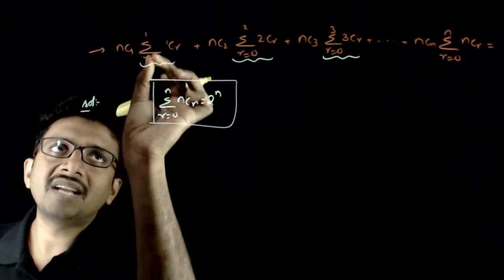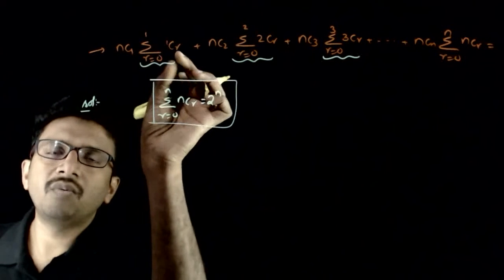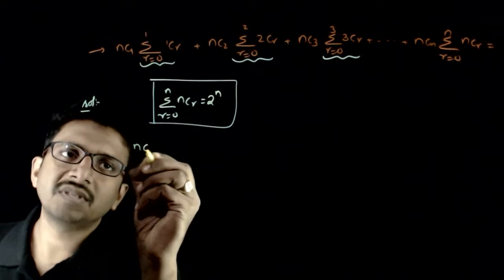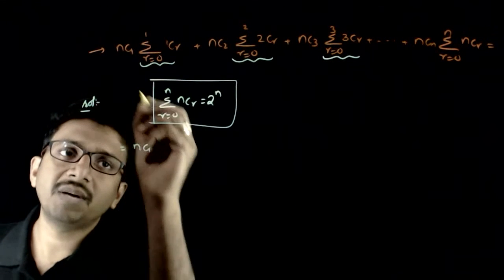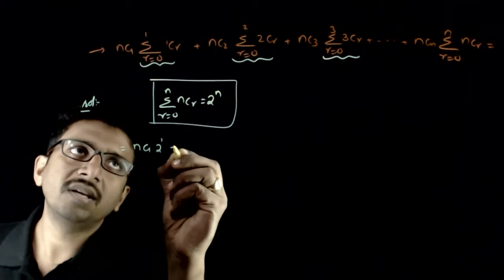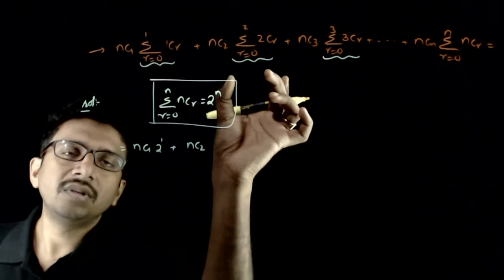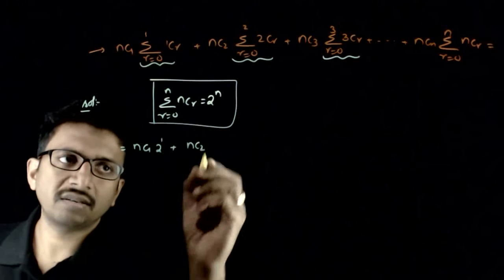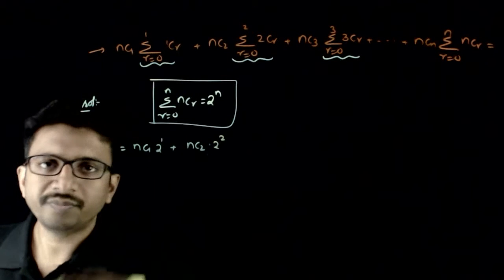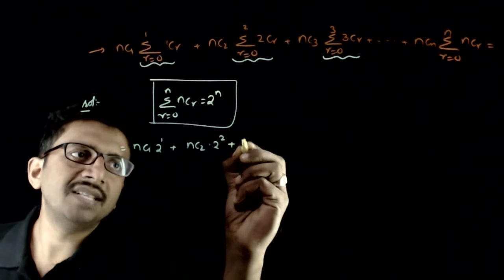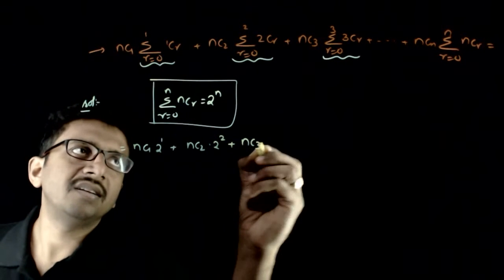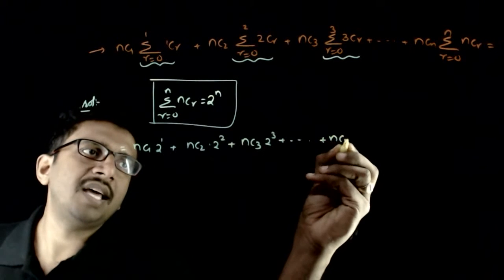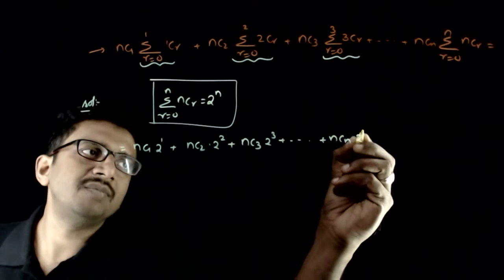So what is sigma(r=0 to 1) 1Cr? It is nothing but 2 power 1. So this expression becomes NC1 times 2 power 1, plus NC2 times 2 power 2, plus NC3 times 2 power 3, and so on, plus NCn times 2 power n.